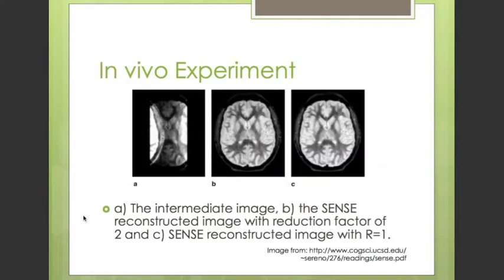An axial brain image was taken with SENSE MRI. Two coils were placed next to the patient's head facing each other. The sequence used was inversion recovery turbo spin echo, with a field of view of 210 mm and a flip angle of 90 degrees. TI was 159 ms, TE was 11 ms, slice thickness was 5 mm, and there were 17 echoes per echo train. The image depicts: A, the intermediate image; B, the SENSE reconstructed image with reduction factor of 2; and C, the SENSE reconstructed image with R equals 1. Although the SNR is reduced in R equals 2, there are no visible artifacts or drop in quality.